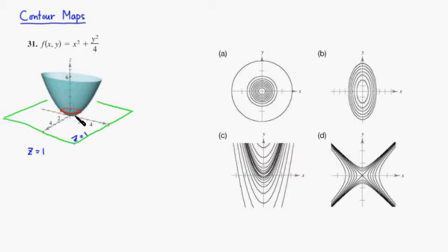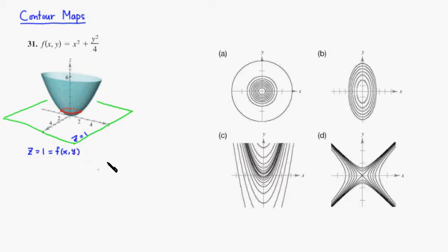Let's see what kind of curve this is. Since z equals 1, all you really have to do is plug 1 into z. Z is actually this function, so you would replace f of x, y with 1. So you get the equation x squared plus y squared over 4 equals 1.